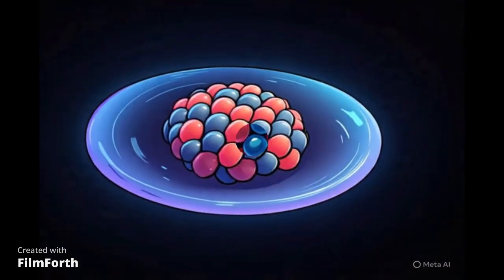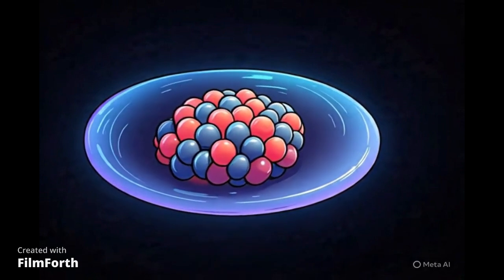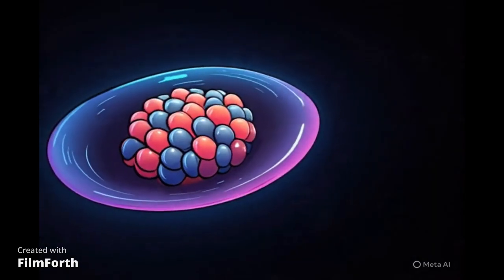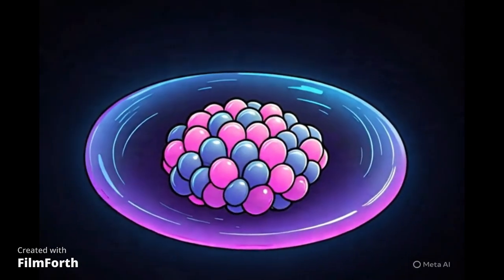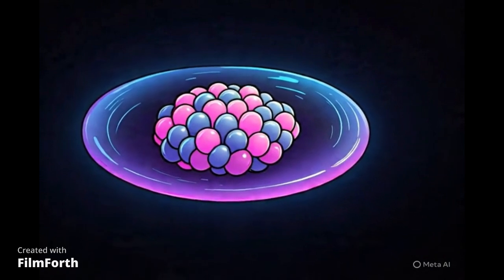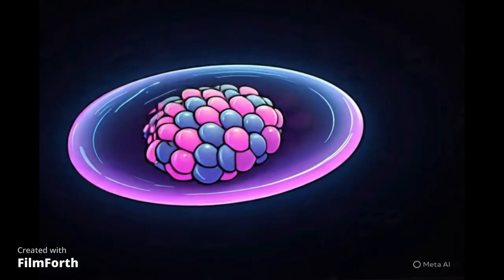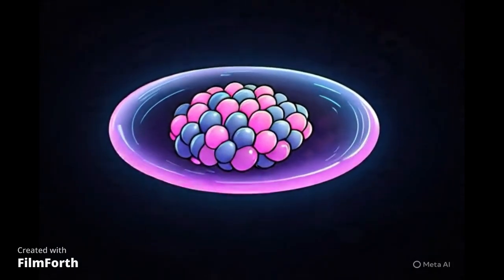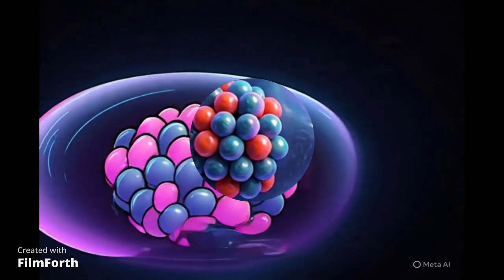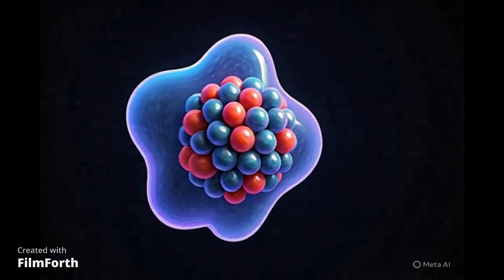Now imagine taking that same sphere and instead of stretching it, you flatten it, like pressing down on a ball to make it wider and thinner. This flattened, disc-like shape is another type of ellipsoid, known as oblate. Think of a spinning top that's been squashed a little. That's an oblate nucleus. But the complexity doesn't stop there.